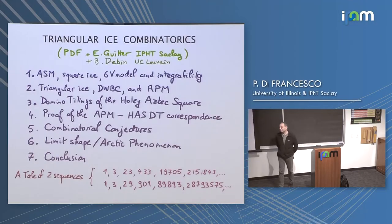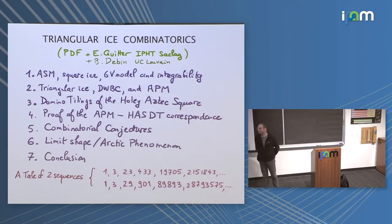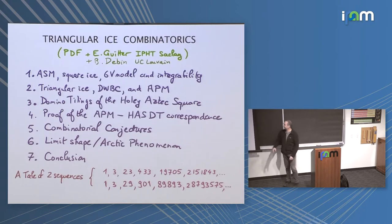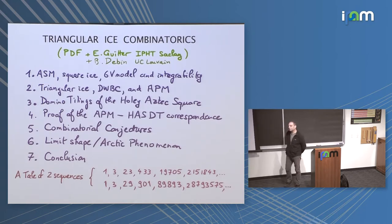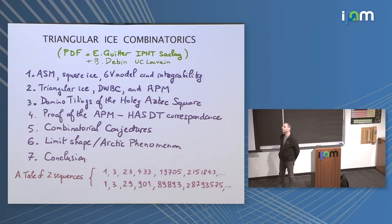Thank you. Let me start by thanking the organizers for this invitation in this beautiful place, finally realizing my acte manqué in September of 2001 when I was supposed to visit here and then, you know what happened, and I couldn't. So I'm very happy to be able to now. This talk will be about combinatorics mainly, but also some asymptotics, so I think I'm still within the limits of a conference, and it will be about the triangular lattice version of a six-vertex model basically.